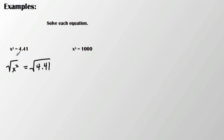Because I know that taking the square root of something will undo the squaring of that value. So that'll leave me with x. And when I take the square root of 4.41, that's going to leave me with 2.1 or negative 2.1.